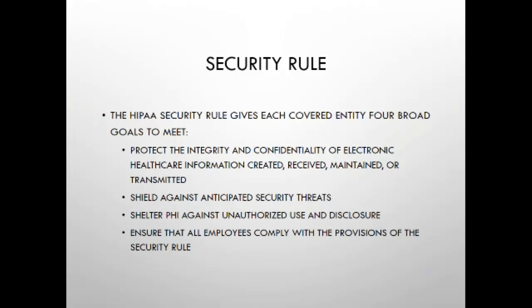The HIPAA Privacy Rule governs the use and disclosure of PHI in all forms, whereas the HIPAA Security Rule outlines the administrative, physical, and technological measures that covered entities must take to implement and comply with the Privacy Rule. In a nutshell, the Privacy Rule is a statement of principles and the Security Rule is a plan for applying them.